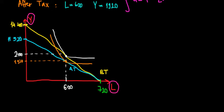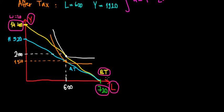Let's understand the budget constraint and then move on to the math. In the beginning, when the wage equals 20 euros, the maximum amount of money we could earn is 14,400 euros — that's 20 times 720 total hours. The yellow line is the budget constraint before tax. When we have the 20% tax, the wage decreases by 4 euros to 16 euros, so the maximum becomes 11,520 euros. The blue line is the budget constraint after tax.